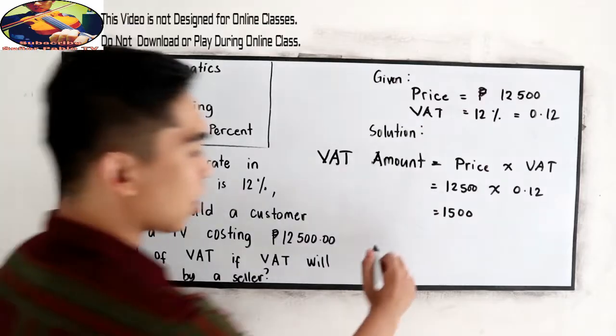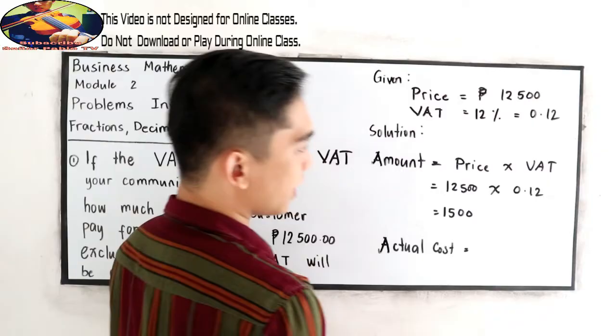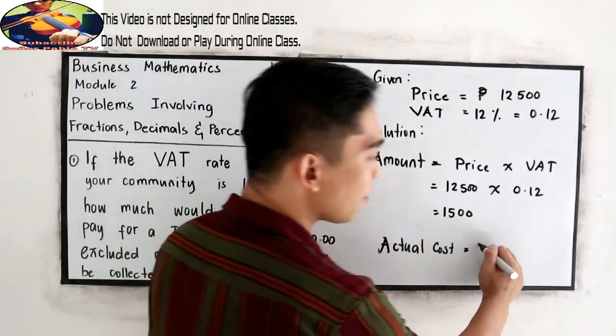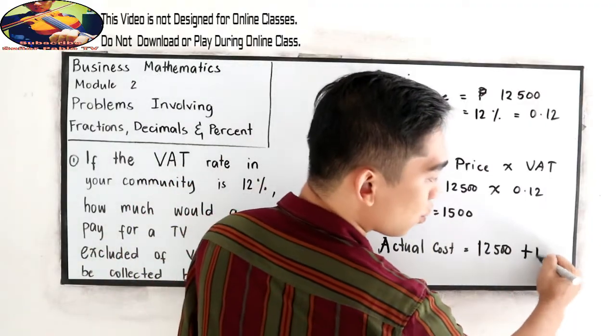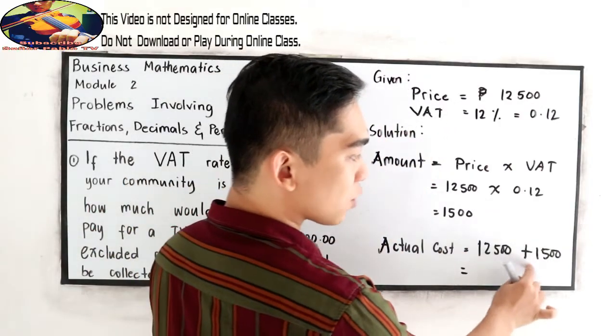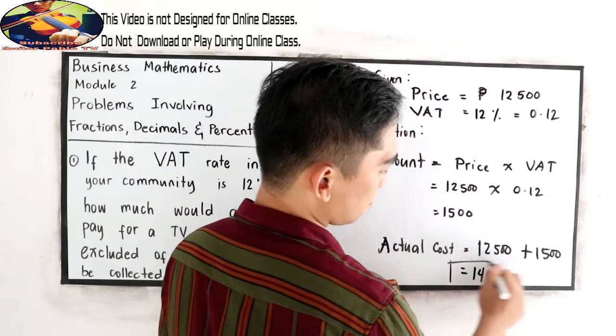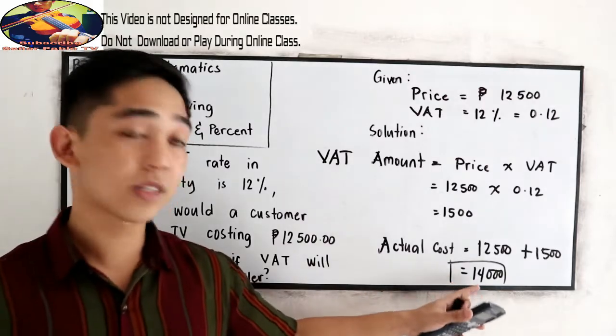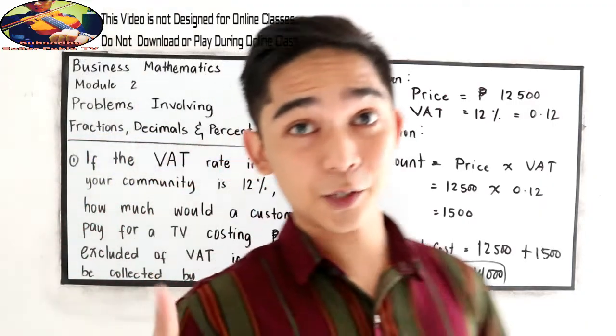The actual cost now is 12,500 plus the VAT, which is 1,500. So 12,500 plus 1,500 equals 14,000 pesos. If you're going to buy the TV, it would cost 14,000 pesos. That is our first problem.